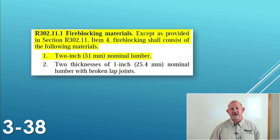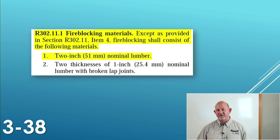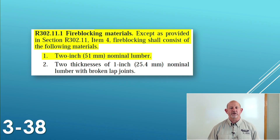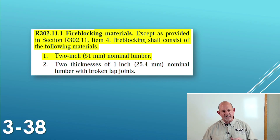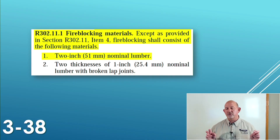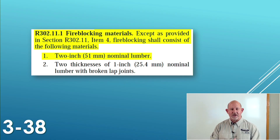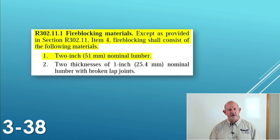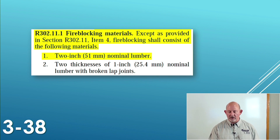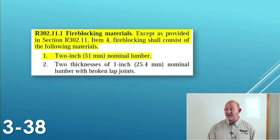It says, except as provided in section R302.11 item four, fire blocking shall consist of the following materials. Number one: two-inch nominal lumber. If it's going to be fire blocking, it's got to be a two-by. They use the term 'nominal' — when you order two-by-fours and pick them up, you actually get inch-and-a-half by three-and-a-half. The nominal dimension is also known as the rough sawn dimension. When they cut that lumber, they cut it two inches by four inches, then ran it through a planer, which took a quarter inch off each side — so now you're short a half inch. Nominal two-inch means call it a two-inch; it was a two-inch before it was planed.